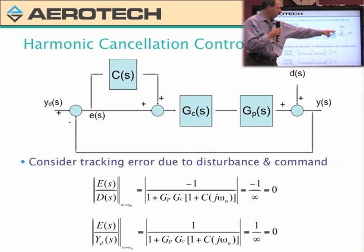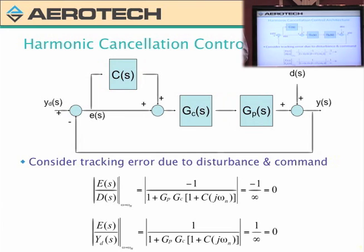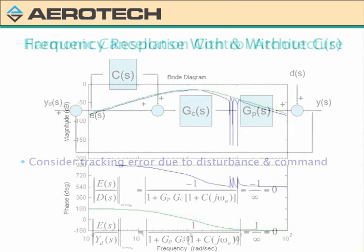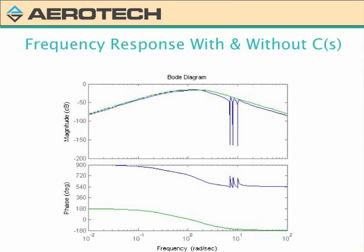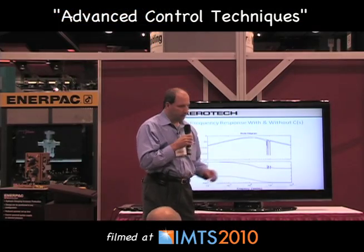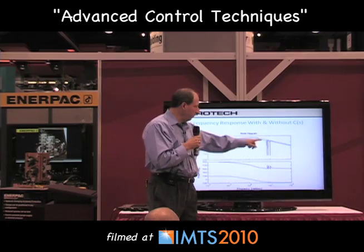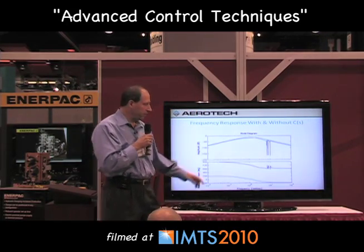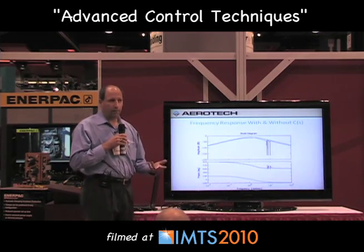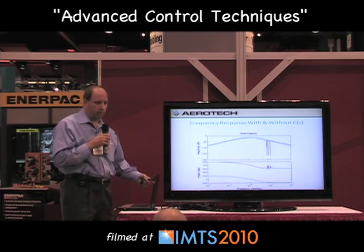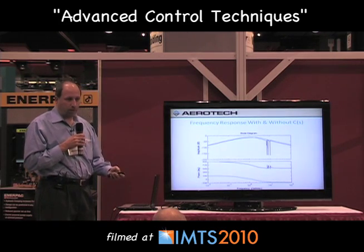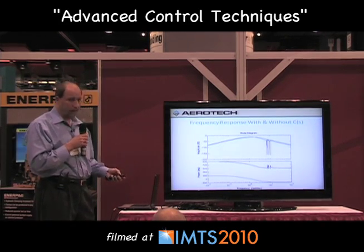So any sinusoidal disturbance will not affect the output at all. And the same for a sinusoidal input Y of S — I'll see a tracking error of zero. Looking at the rejection curve in the frequency domain, the green line is what the normal curve looks like without the filter, and the blue line is what it looks like with the filter. At three distinct frequencies I have zero transmission, so something like a ripple torque or a mass imbalance would not affect the output of the system.